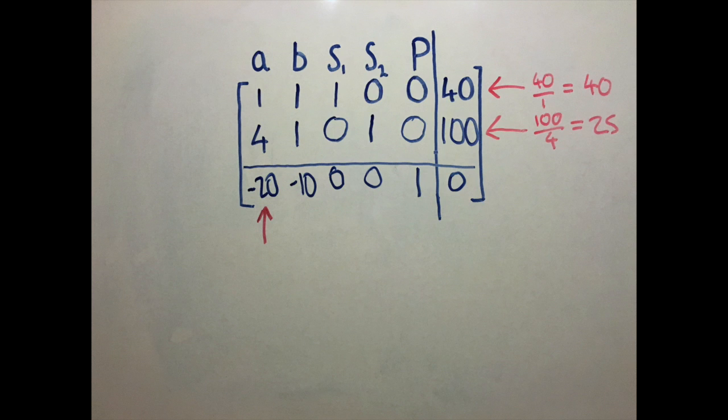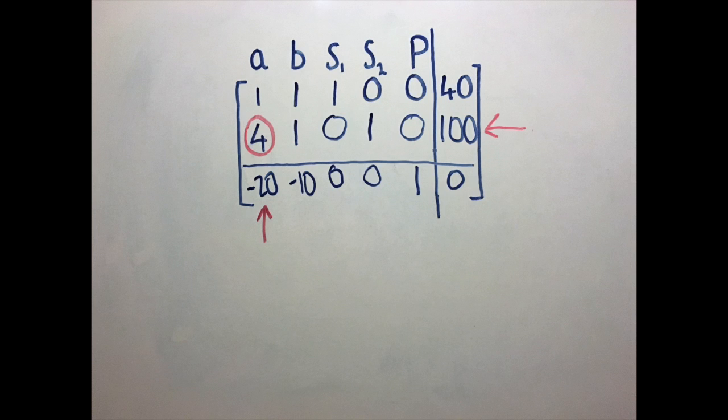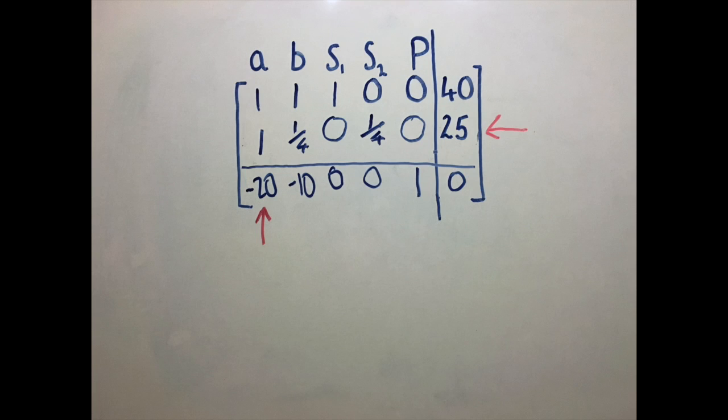So obviously, we select the second one, 25. We now have our pivot, 4, and we want to divide every entry in its row by the pivot, which results in this row here.